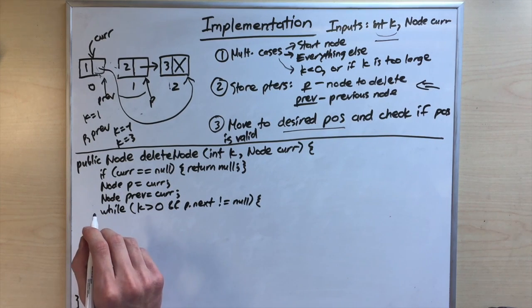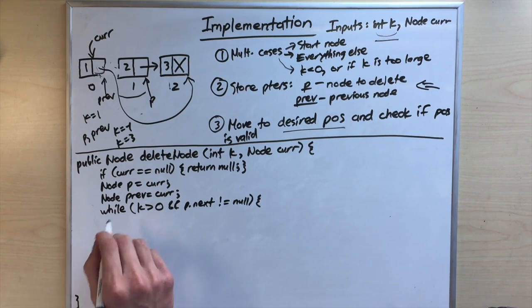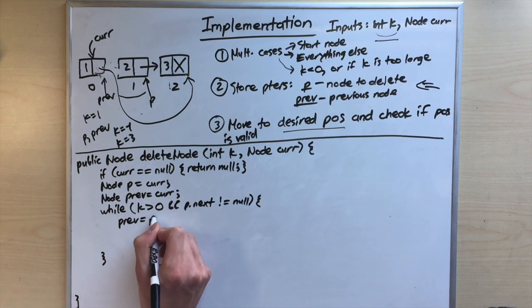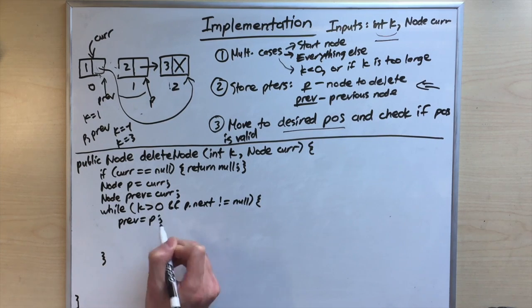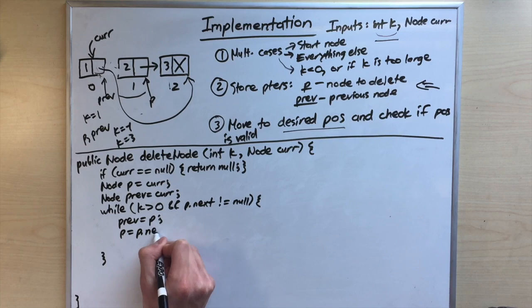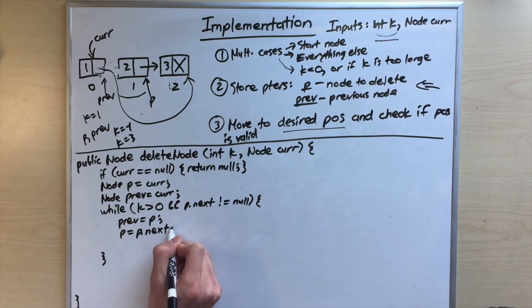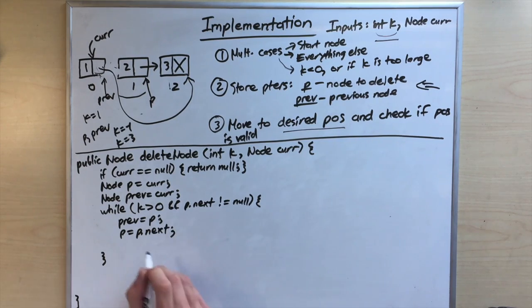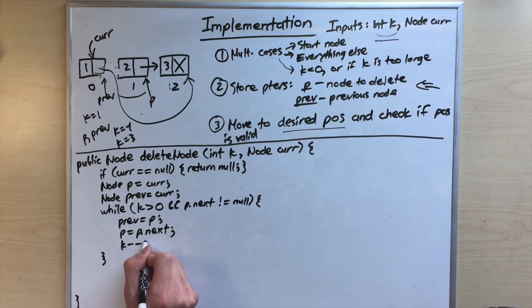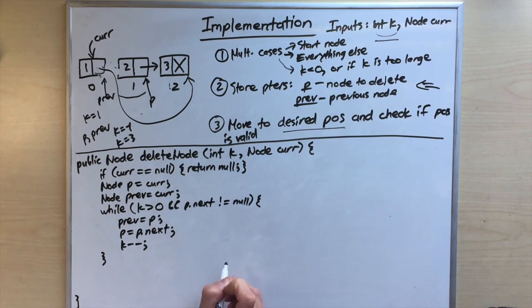Inside the loop, we set prev equal to p, then p equals p.next, and decrement k by one. These steps keep prev one step behind p and move us toward our target position.